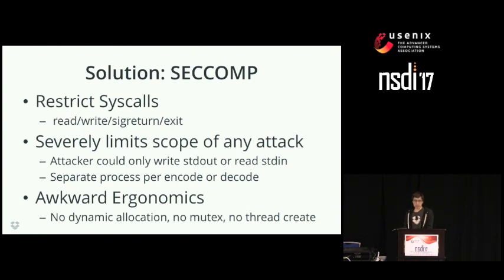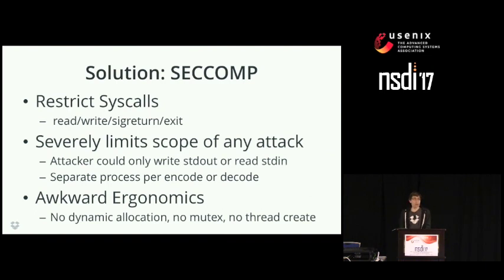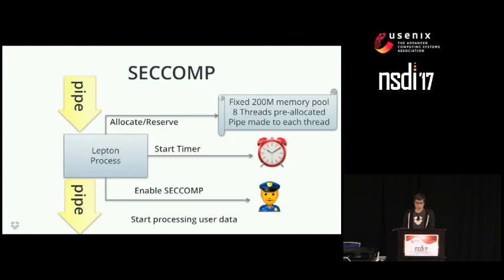However, seccomp has some awkward ergonomics. Memory has to be pre-allocated. Standard thread synchronizations are inoperative, so we had to craft our own versions of mutexes and thread-safe queues by opening up pipes and using atomic operations to ensure memory was serialized between threads when there was communication. Threads also needed to be pre-created up front. This left us with a design that started each thread with a pipe pair, allocated all memory up front, and started a timer before enabling seccomp and finally reading user data.